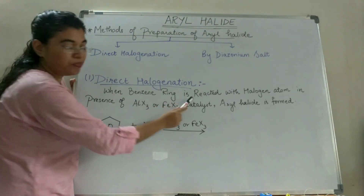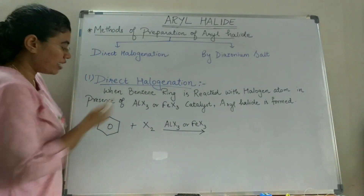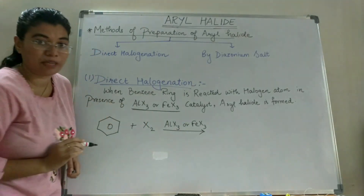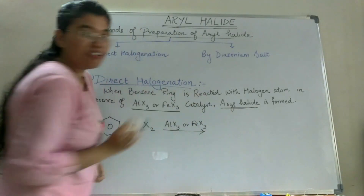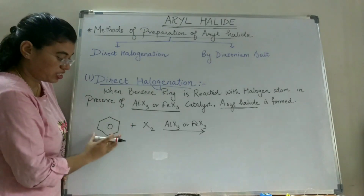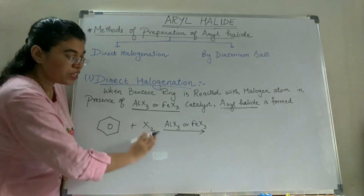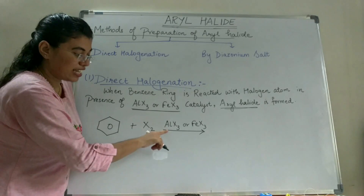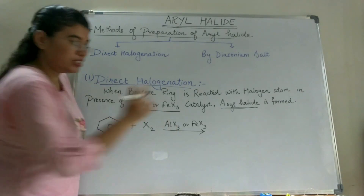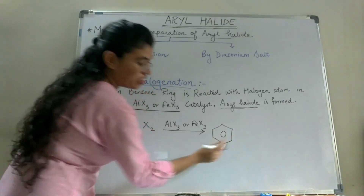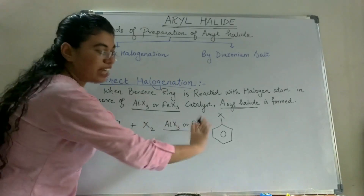In the direct halogenation method, a benzene ring is reacted directly with a halogen atom in the presence of a catalyst — that is AlX3 or FeX3. These catalysts act as Lewis acids. When the benzene ring is reacted with the halogen atom X2 in the presence of this catalyst, we get the Aryl Halide product. So this is the direct halogenation method.